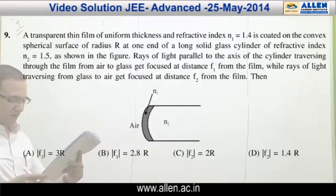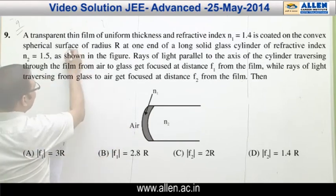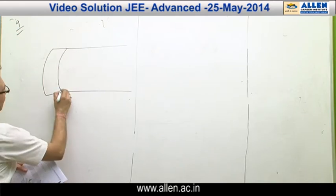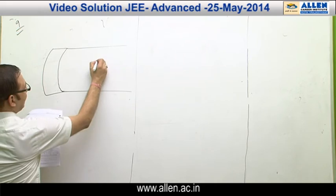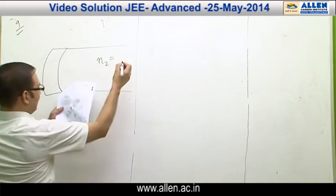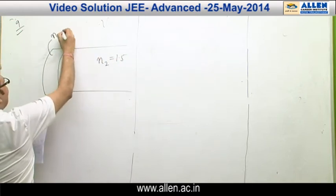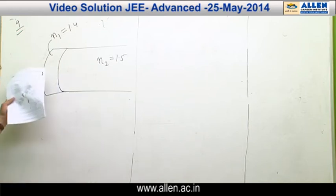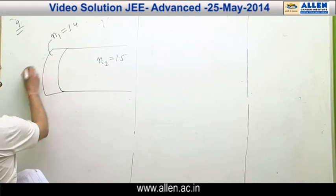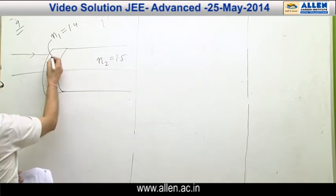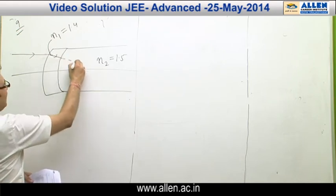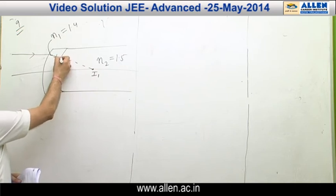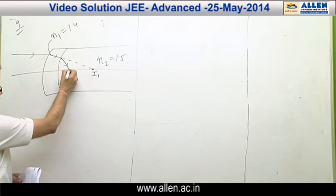Question 9 is from optics — it is a question on refraction at a curved surface. There is a glass slab in which there is a thin film. The refractive index of the glass slab is N2 = 1.5 and the refractive index of the thin film is N1 = 1.4. In the first part, light is coming from air and going into glass. There is a first refraction producing a virtual image I1, and then a second refraction at the next surface, with the ray finally meeting at point F1.